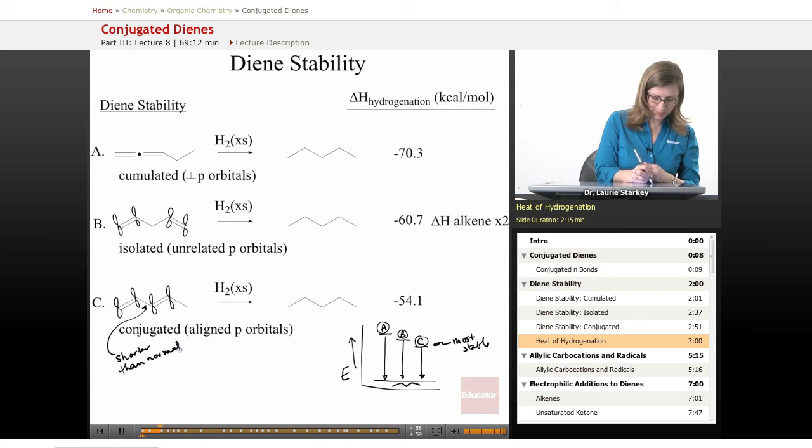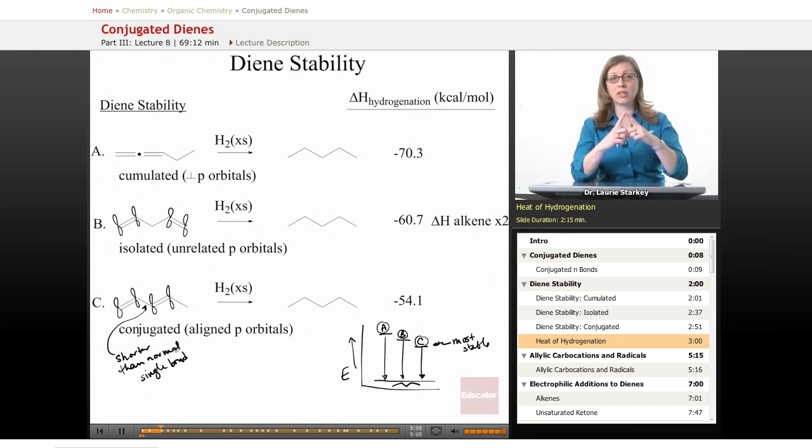Okay, because you have these p orbitals on each carbon that are drawing them close together because of that overlap. So it gives us some hint that those electrons are being delocalized over all four carbon atoms.